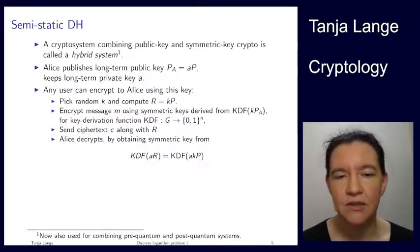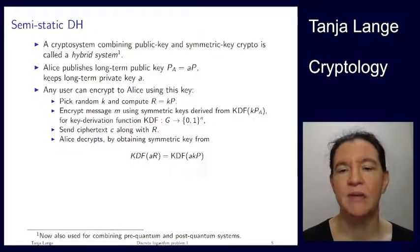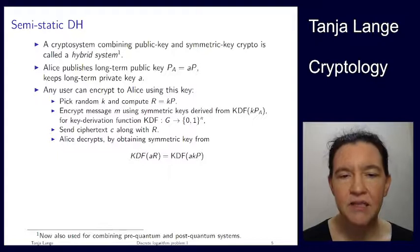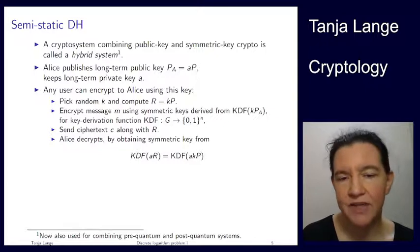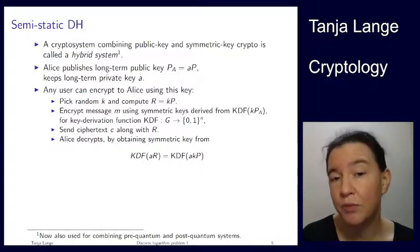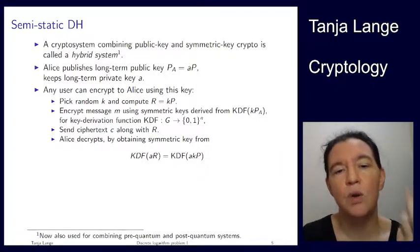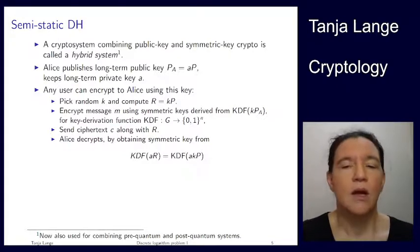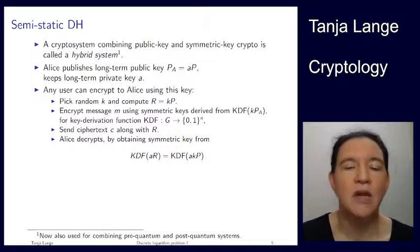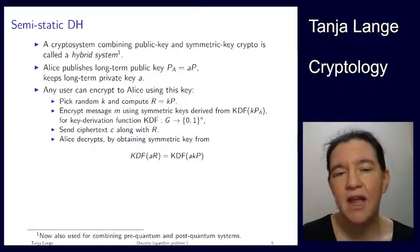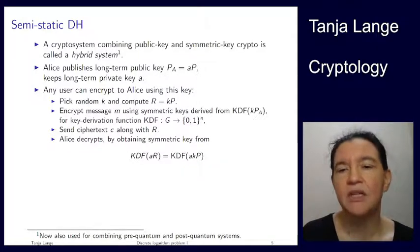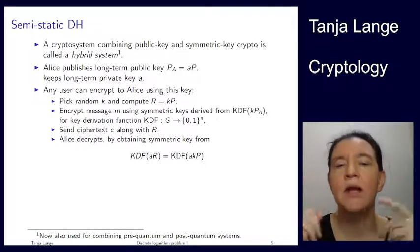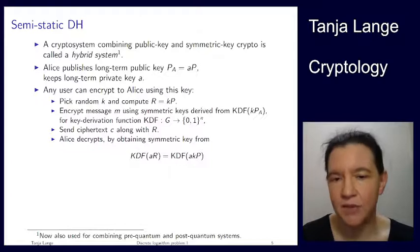So Bob computes the shared key k times PA, applies the KDF, and uses that as a symmetric key to compute a ciphertext. He can send the ciphertext without any more interaction with Alice. But he also needs to send what would be his key share in the interactive Diffie-Hellman protocol — so he sends R as well. Then eventually Alice wakes up and notices somebody wants to talk to her. Just as in Diffie-Hellman, she can recover the shared key: her public key PA is a times P, she knows lowercase a, and she gets R — so she computes a times R, applies the KDF, gets the same symmetric key, and decrypts.